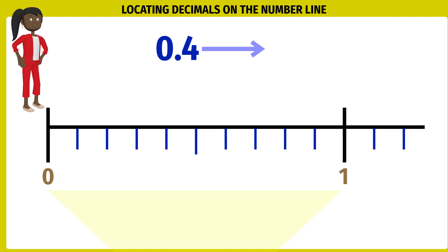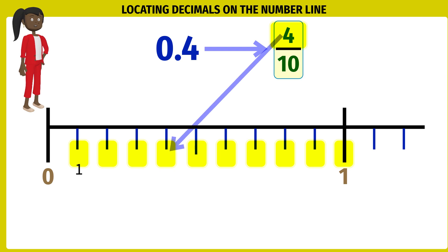Now, let us focus on the fraction part. 0.4 means 4 by 10. Denominator 10 means the space between 0 and 1 is divided into 10 parts. Numerator 4 means it is located at the fourth such division.